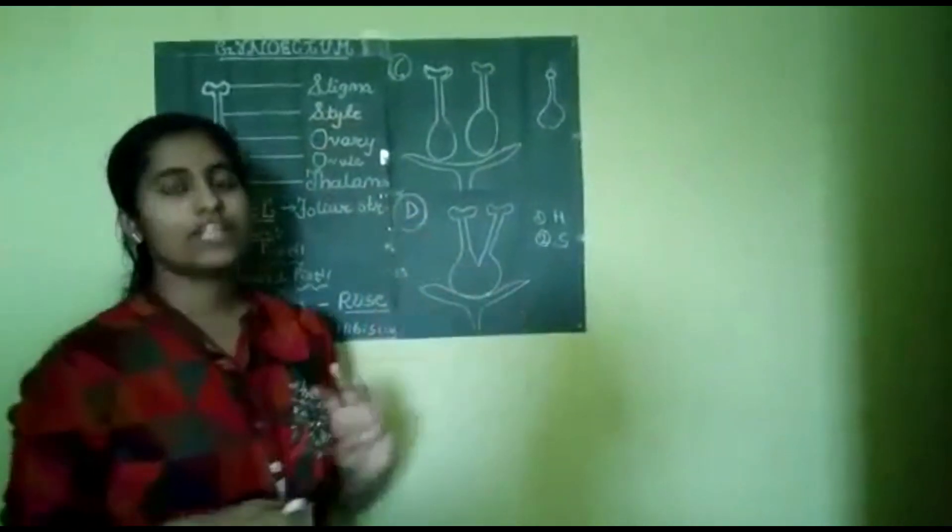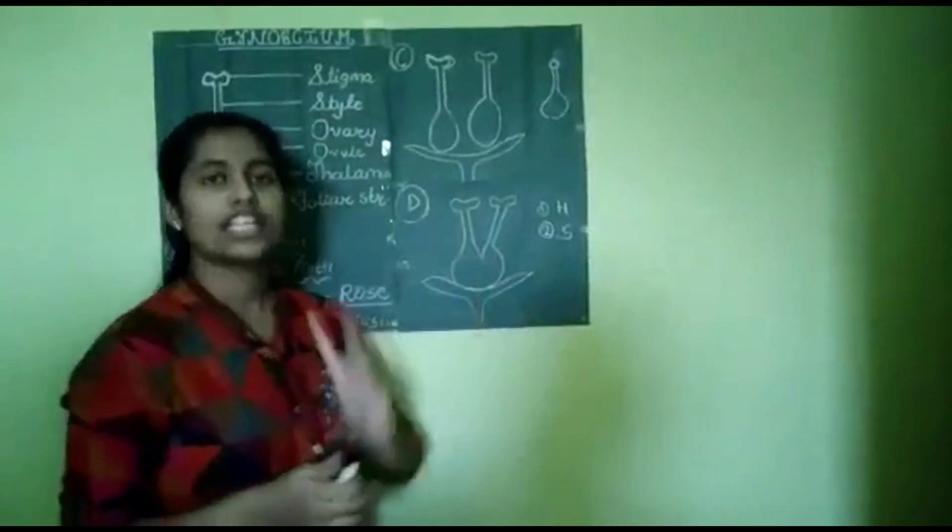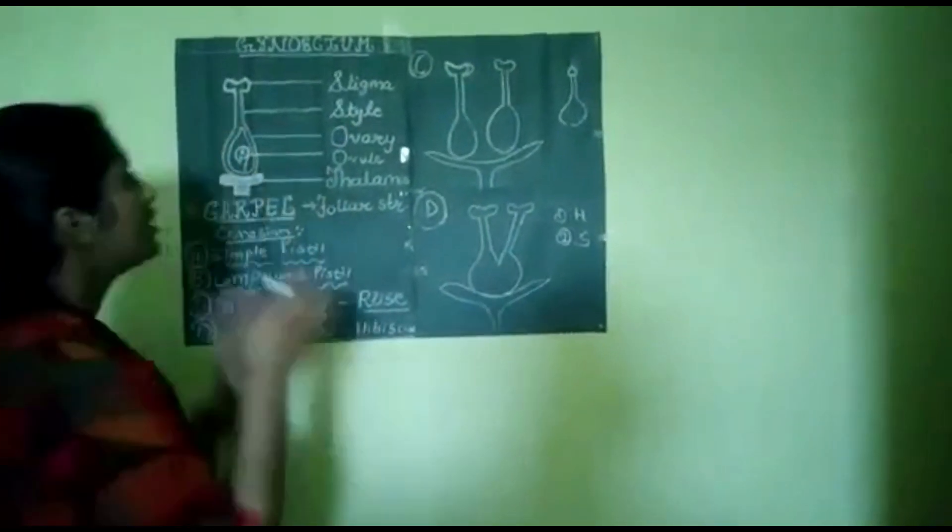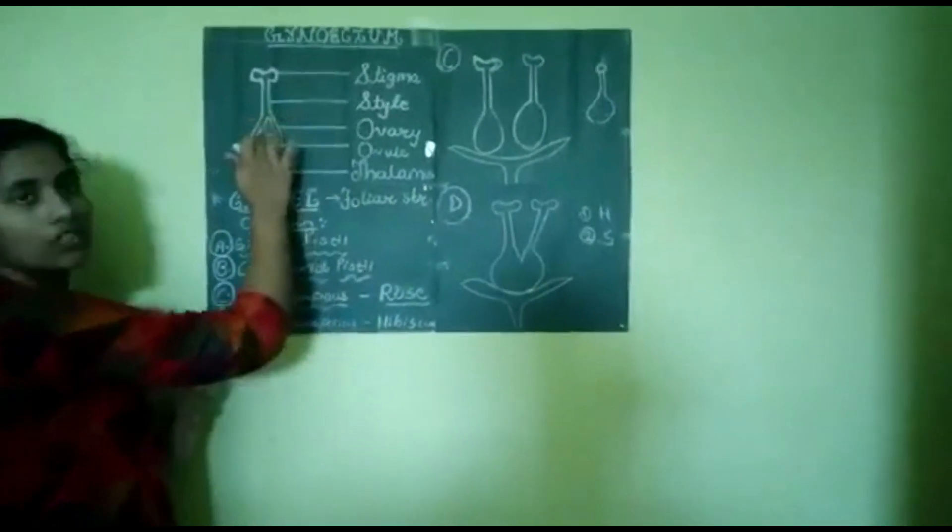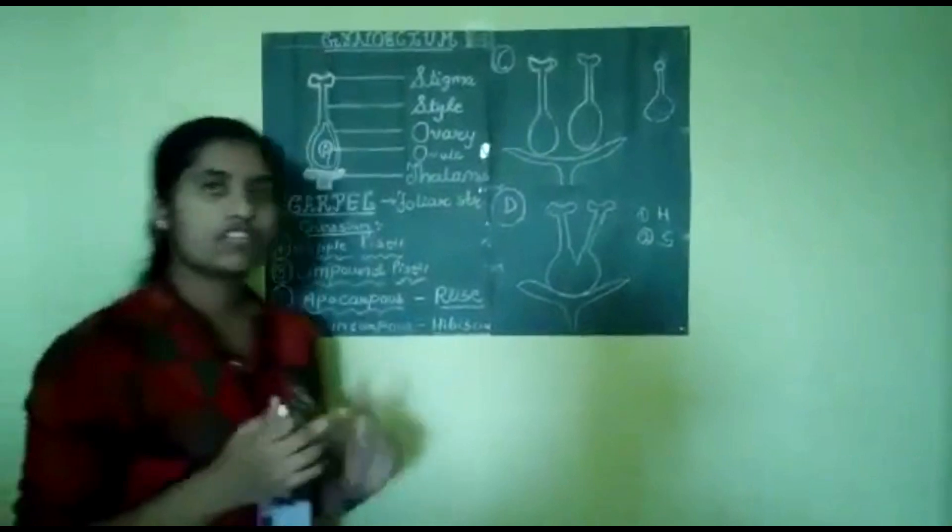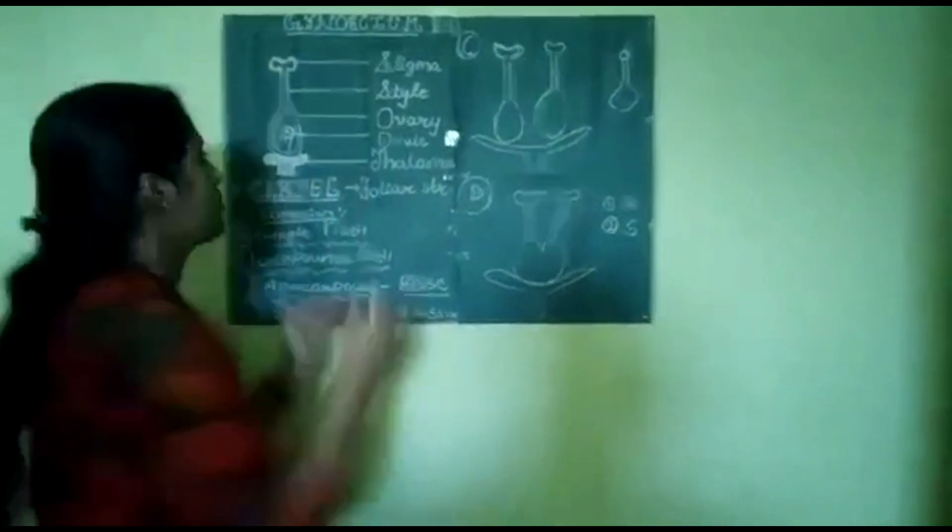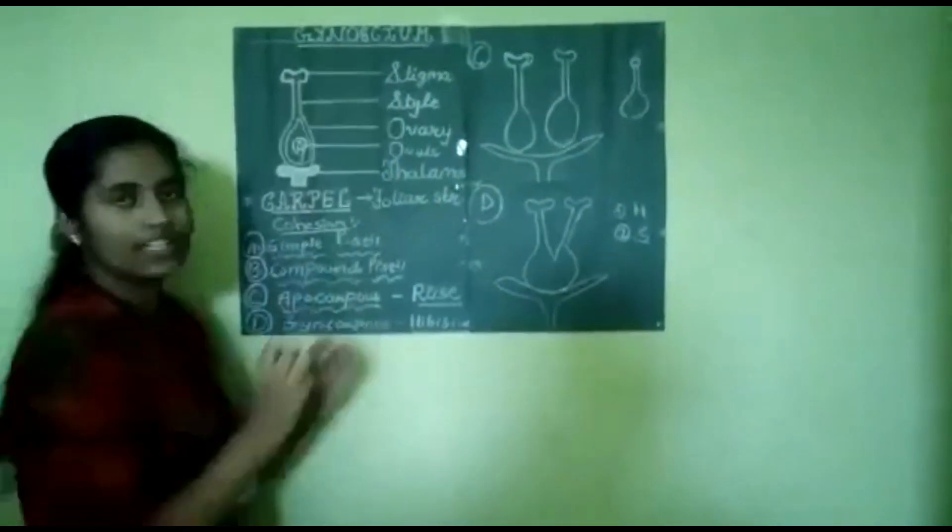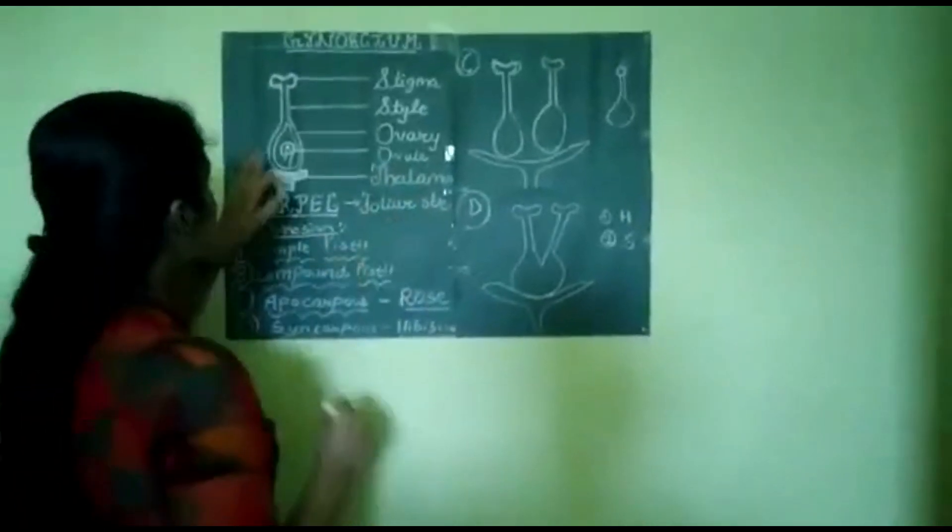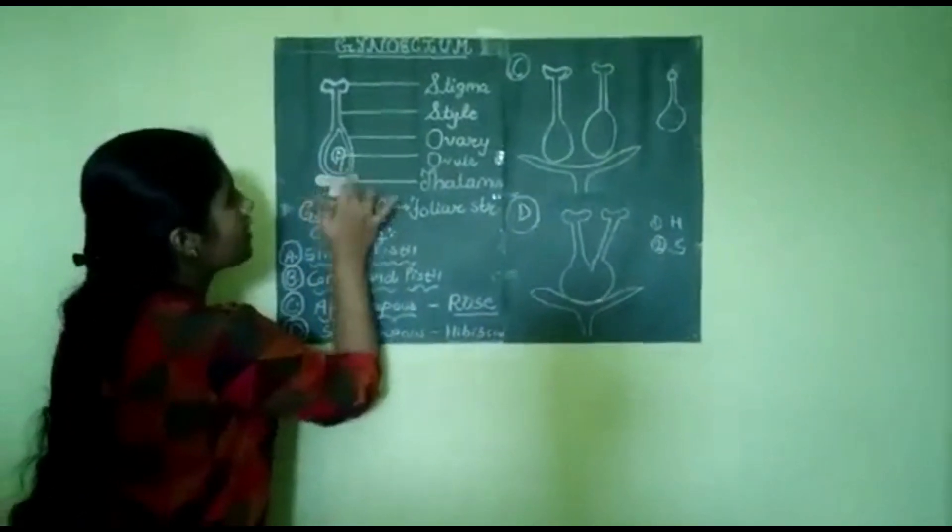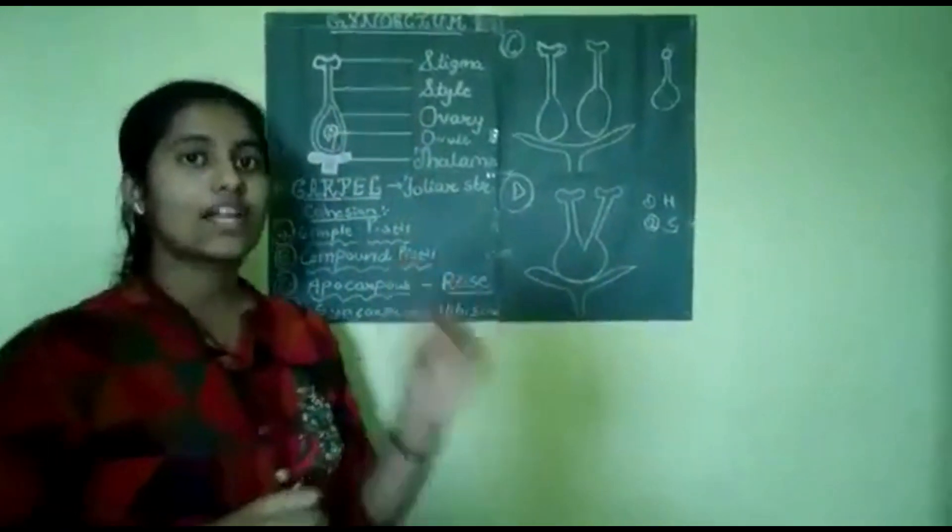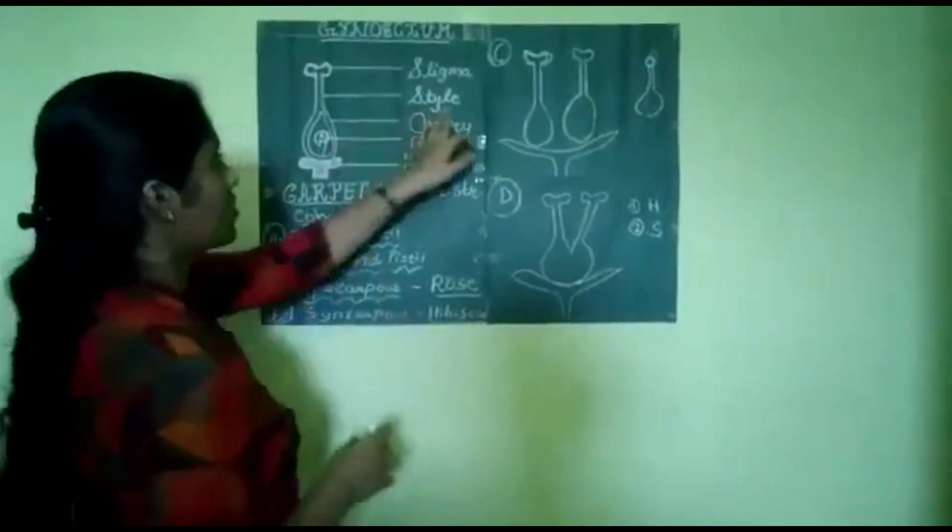Usually they are divided into three: terminal, lateral, and gynobasal. Terminal style is that style which arises from the terminal region of the ovary. In case of lateral, when it arises from the lateral side of the ovary, it is called as lateral style. And in case of gynobasal, when it arises from the basal region of the ovary, it is called as gynobasal style.